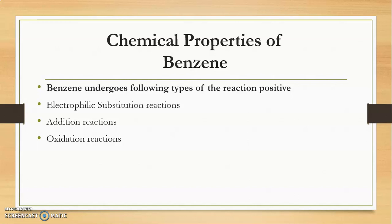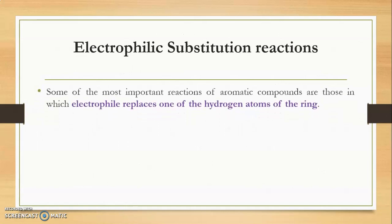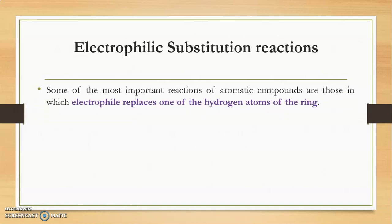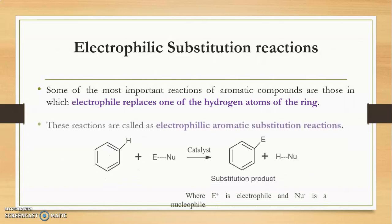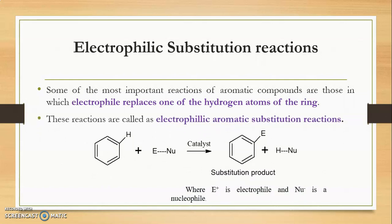Now we will see one by one what is electrophilic substitution reaction and which are its different examples, then the different addition reactions as well as oxidation and reduction reactions. Some of the most important reactions of aromatic compounds are those in which an electrophile replaces one of the hydrogen atoms of the ring. These reactions are known as electrophilic aromatic substitution reactions.